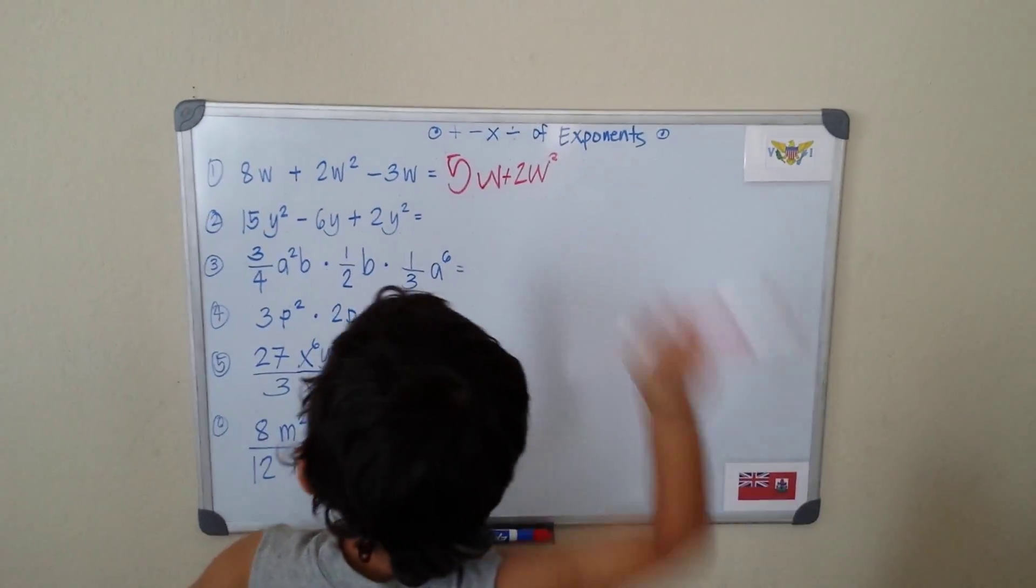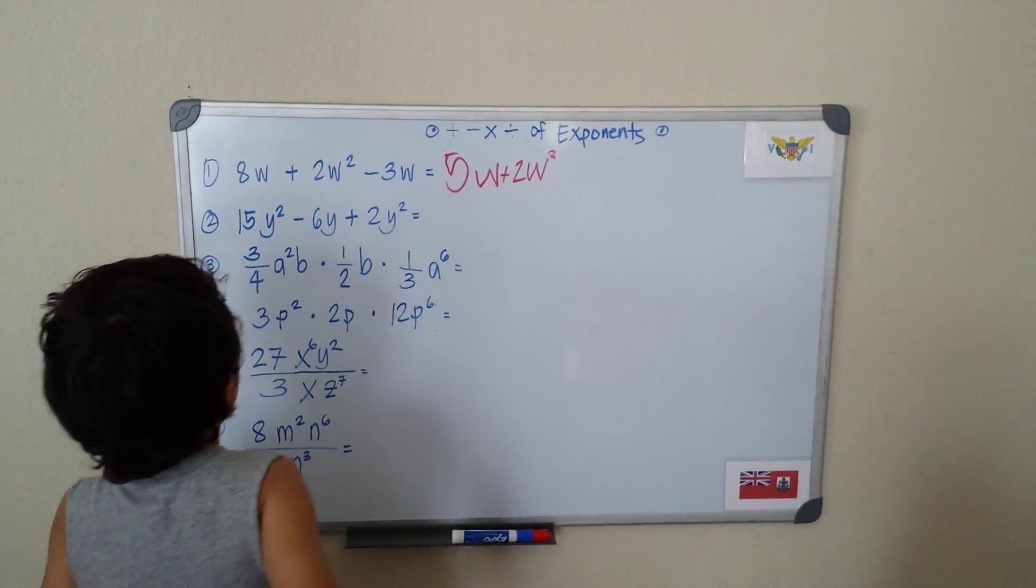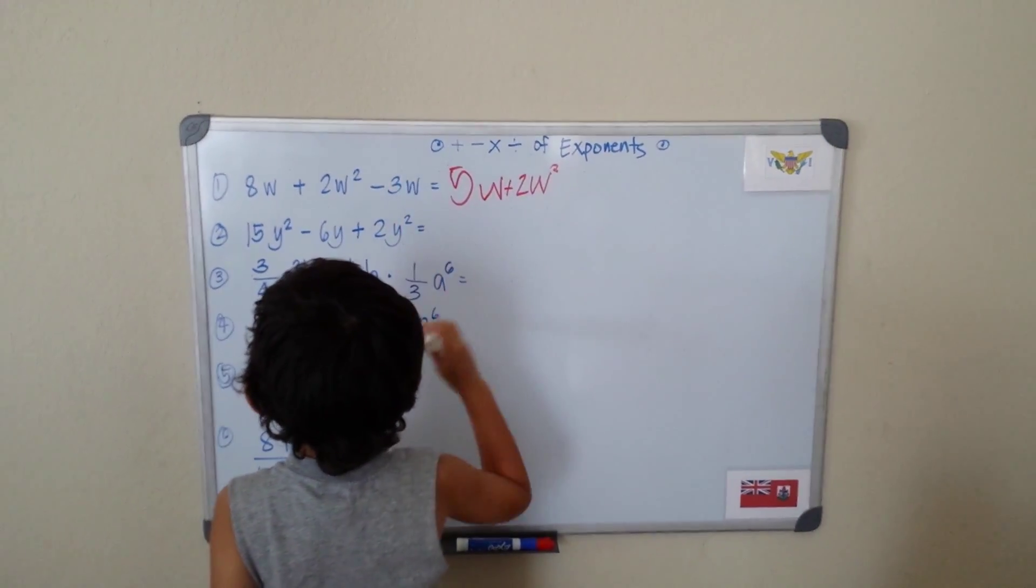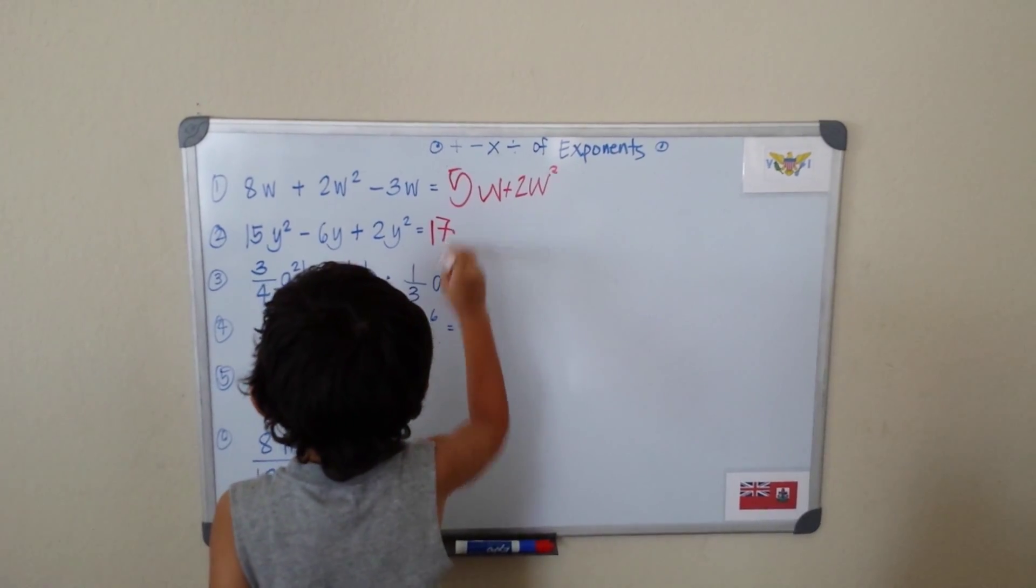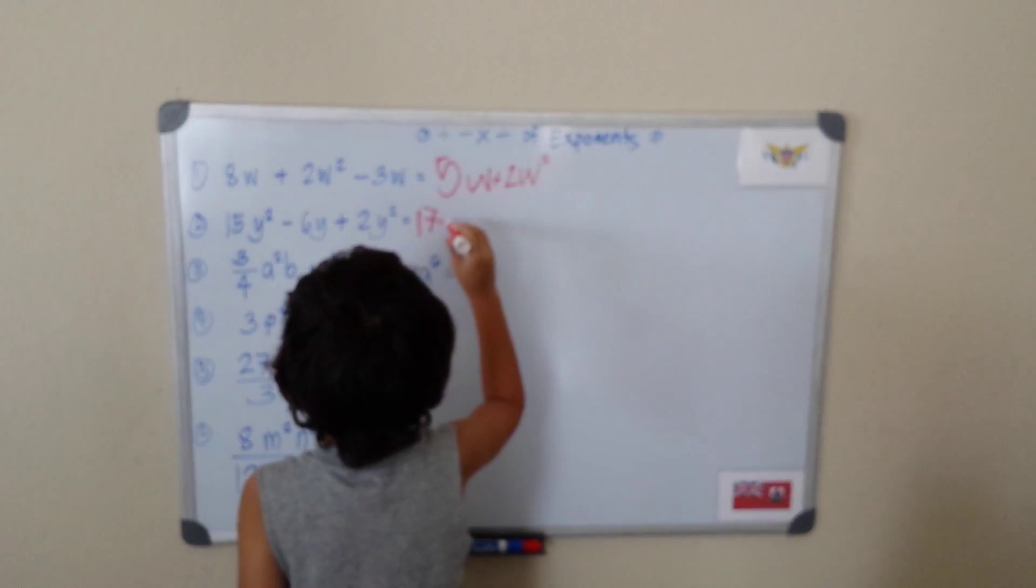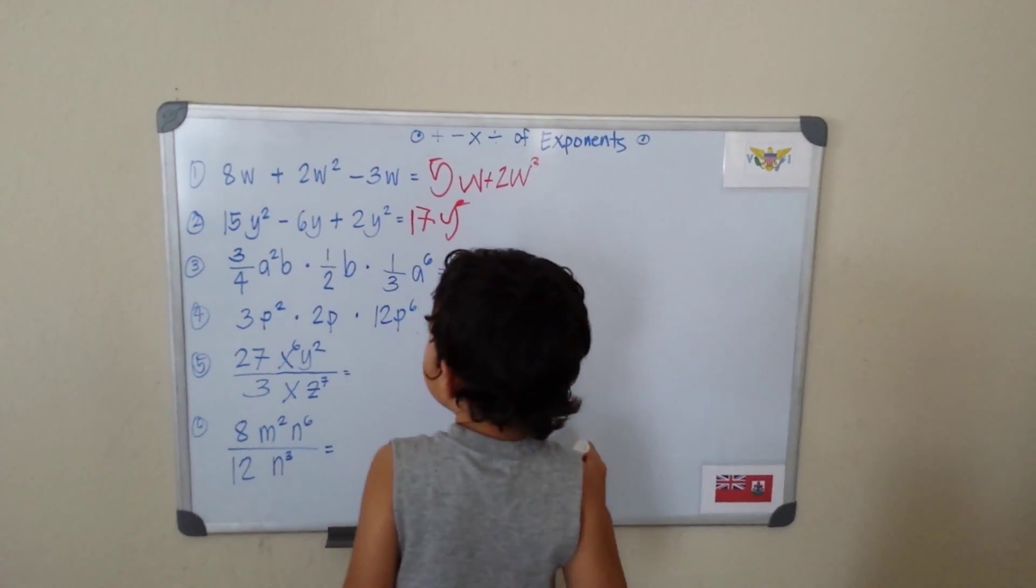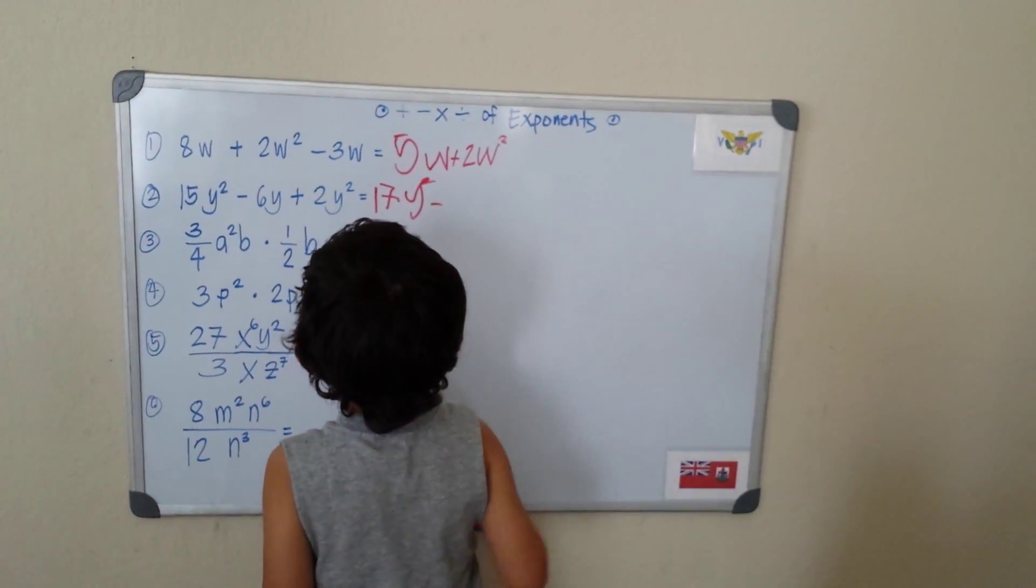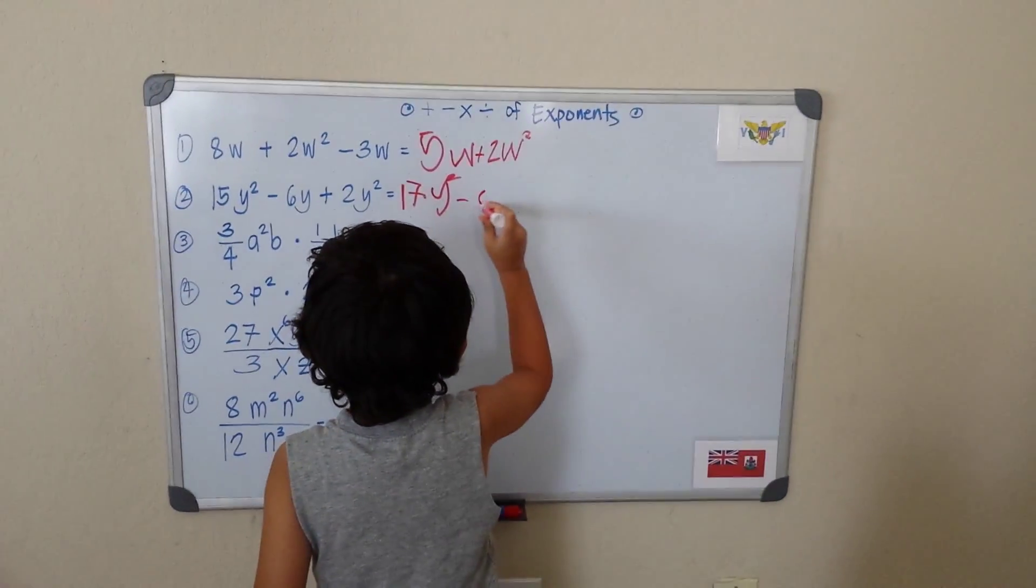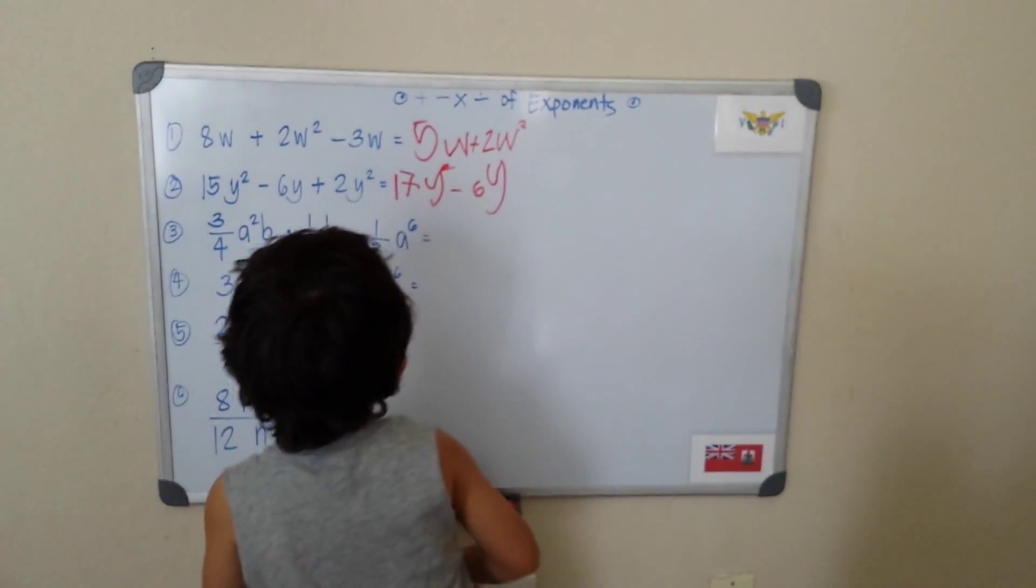So we can combine those. You can't combine those. So 15 plus 2 will give me 17. 17Y squared minus, you can't minus the 6Y. That's my final answer.